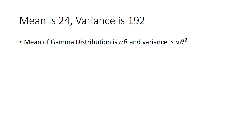The mean is in the form alpha times theta, and the variance is alpha times theta squared. So let's set alpha theta equal to 24, and alpha theta squared equal to 192. This is for the mean, and this is for the variance.